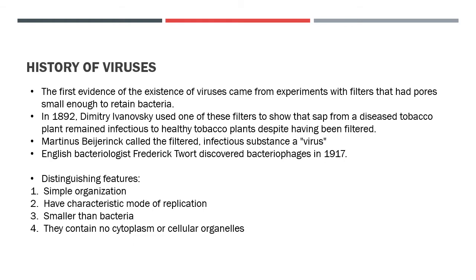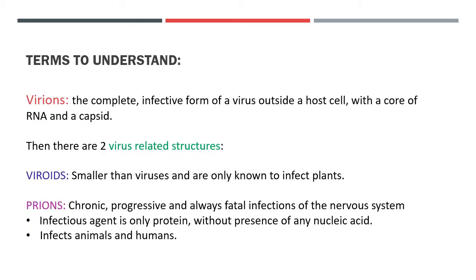There are some terms you may get confused by, so it's better to understand them first. A virion is the complete infective form of a virus outside a host — it has a core of RNA and a capsid. There are also two virus-related structures: viroids and prions. Don't confuse viroids with virions — viroids are smaller than viruses and are only known to infect plants.